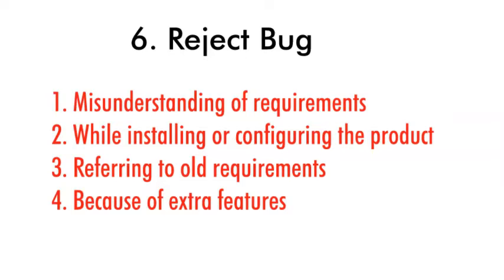Another rejection reason is referring to an old requirement. If the requirement has been changed and it was not reported to the test engineer, they may raise a bug that the developer will reject. Bugs can also be rejected because of an extra feature — the test engineer may raise a bug, but the developer can reject it by saying it's an extra feature not needed in this build.